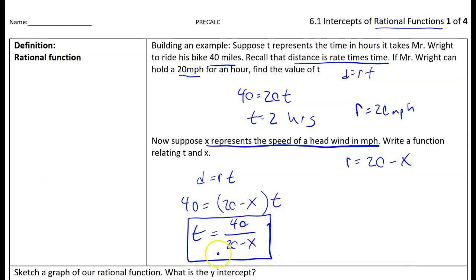Notice as x gets bigger, t gets bigger in this case. If I plugged in 2 here, I'd be going 18 miles per hour on the bottom, and 40 divided by 18 would be a little bit bigger than 2. This model is more complicated than our simple model and it gave us a rational function.